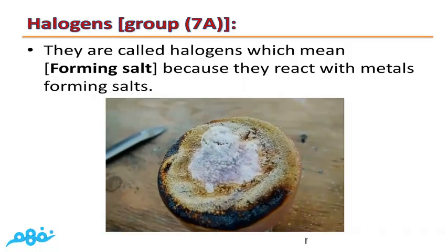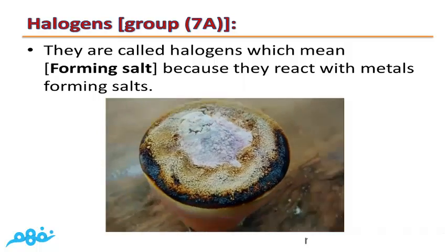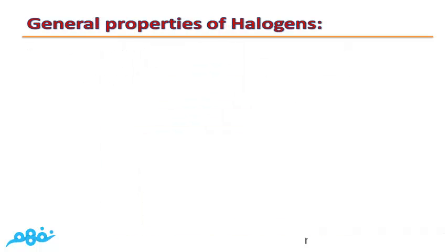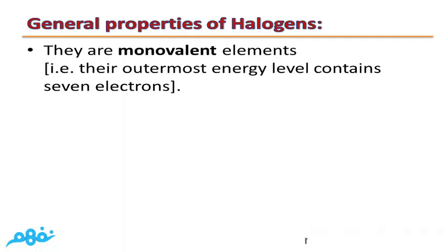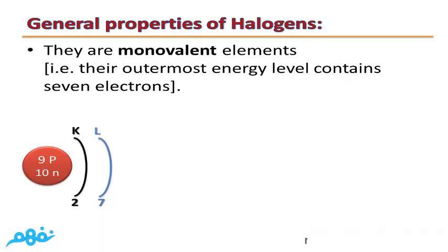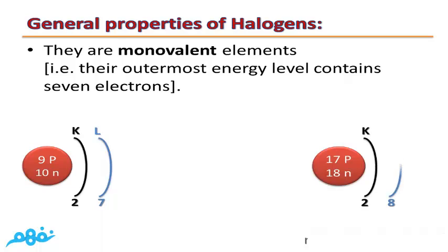The general properties of halogens: First, they are monovalent elements, meaning their outermost energy level contains 7 electrons. For example, Fluorine's outermost energy level L contains 7 electrons and during chemical reaction it will gain 1 electron, so it is monovalent. Chlorine's outermost energy level M also contains 7, making it a monovalent element.